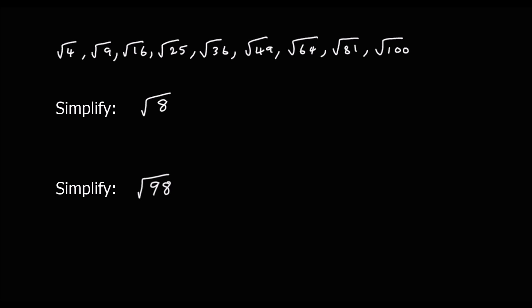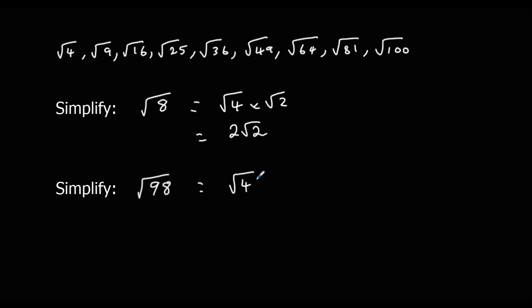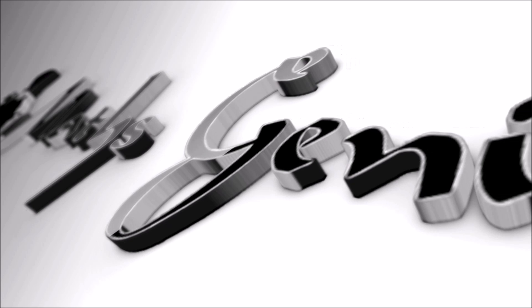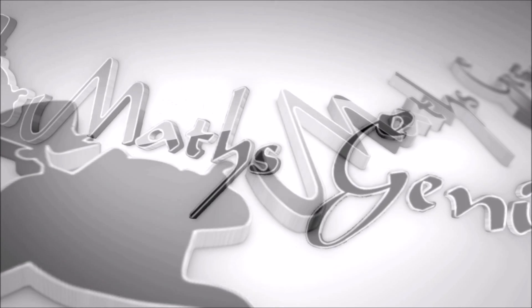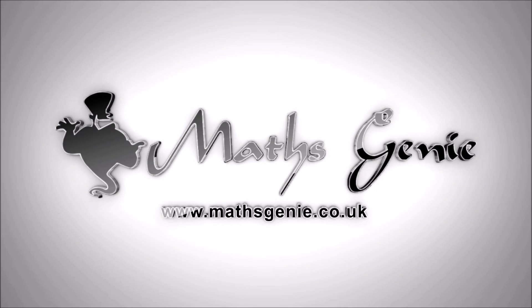Pause the video and see if you can simplify these two. Square root 8: we've got square root 4, so square root 4 times square root 2, which is 2 root 2. Square root 98: you should have identified 49, so square root 49 times square root 2. Square root 49 is 7, so square root 98 is 7 root 2.